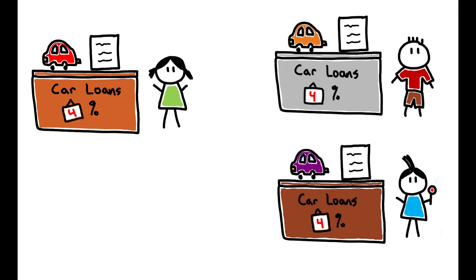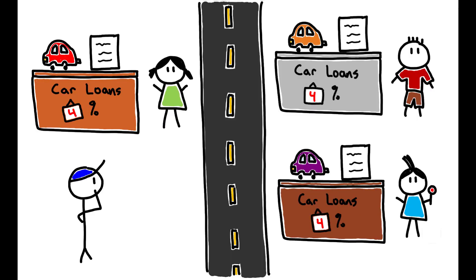Altogether, these results suggest that search costs restrict borrowers' ability to obtain their best available rate in the market for auto loans, and this friction allows price dispersion to persist.